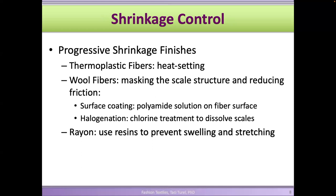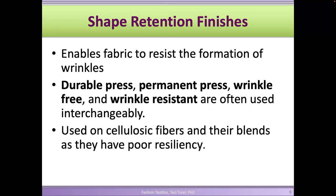Thermoplastic fibers generally go through a heat-setting process to prevent shrinkage. Wool fibers have scales on the surface, so if we mask those scales and make them smoother, it prevents shrinkage. We may do that by coating the surface of the wool fibers with a polyamide solution to make it smoother so fibers don't get stuck on each other. Halogenation is another finish — a treatment with chlorine to dissolve the scales, which also prevents shrinkage. For rayon, we sometimes use resins to prevent swelling and stretching.